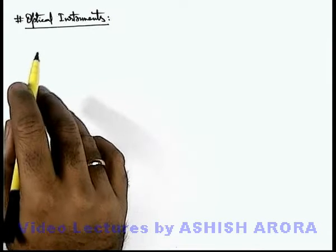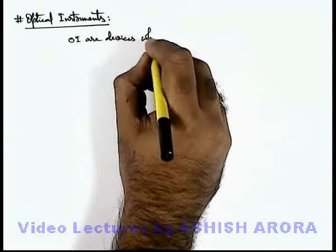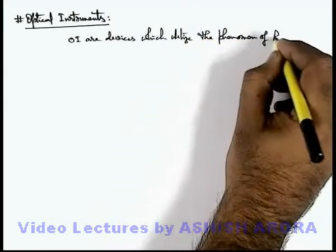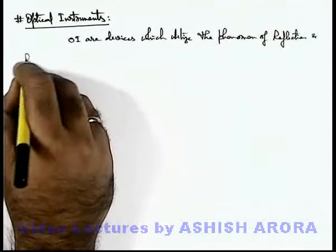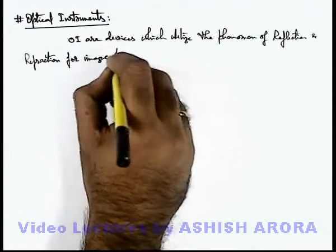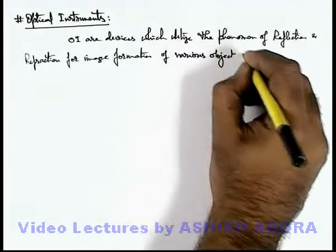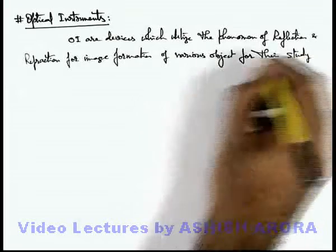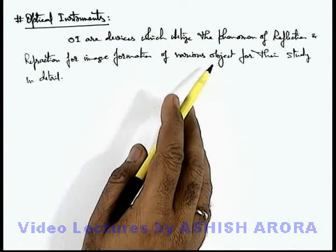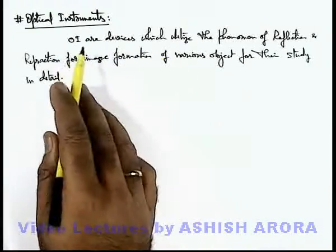Now we'll start the topic of optical instruments. Optical instruments are devices which utilize the phenomena of reflection and refraction, which we've already studied in detail in previous sections, for image formation of various objects for their study in detail. So for any object if we wish to study in detail, its magnified view has to be obtained by using the phenomena of reflection and refraction, and the devices which are used for this purpose we call optical instruments.